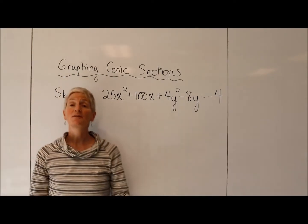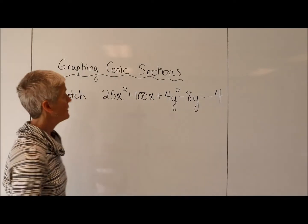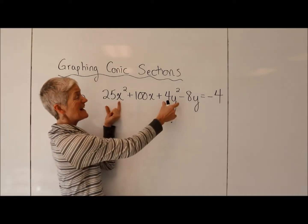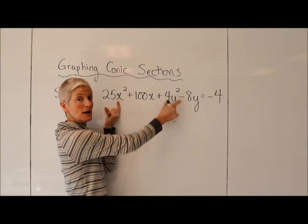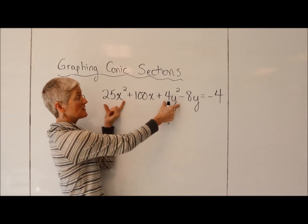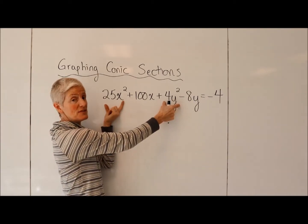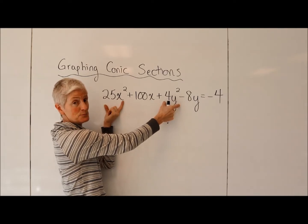So first let's decide what kind of conic section it is. Let's see, I see an x squared and a y squared. That means it's not a parabola. The coefficients of the x squared and the y squared are both the same sign, so it's not a hyperbola.